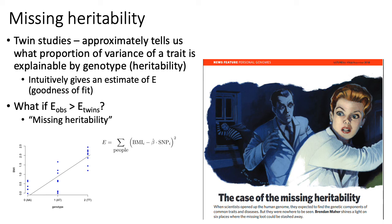Missing heritability refers to the fact that for most complex traits, the scatter we see around the black line is greater than what we'd expect based on twin studies. The twin study says genotypes should accurately predict phenotype very well, but based on our line-fitting procedures, it doesn't predict very well at all. That difference — between the goodness of fit we expect based on twin studies (E twins) and the error we actually observe based on genetics (E observed) — is when we say there's missing heritability, because we know we should be able to explain phenotype better based on genetics, but currently cannot.